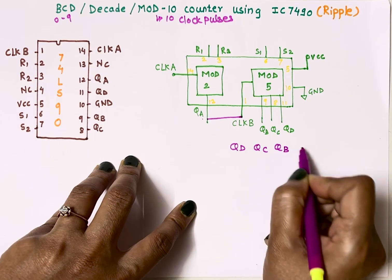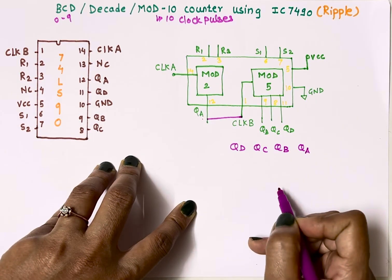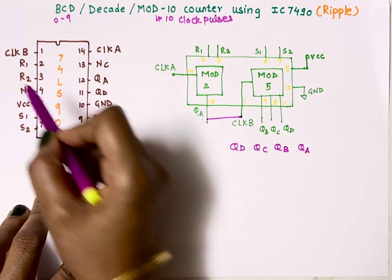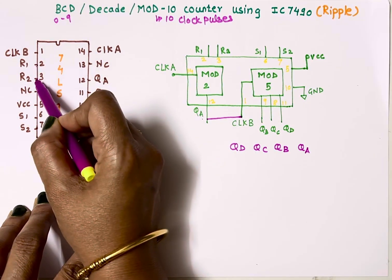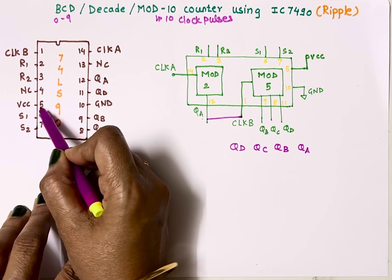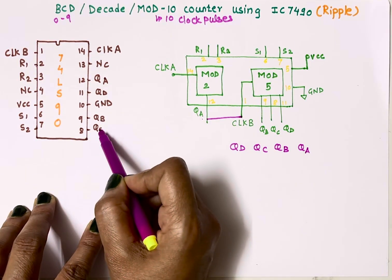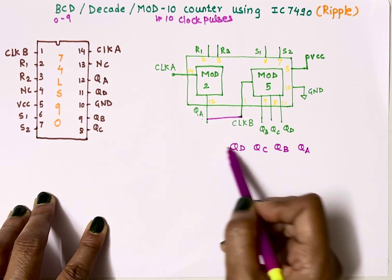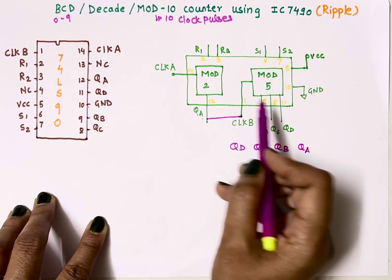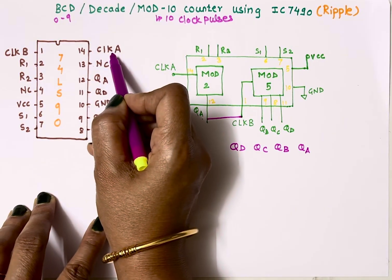R1 and R2 are reset pins, S1 and S2 are set pins. Pin number 5 is VCC, QB, QC, QA, QD are outputs. Pin number 10 is ground, pin number 13 is not connected, pin 14 is clock A where we connect external clock, and pin number 1 is clock B.